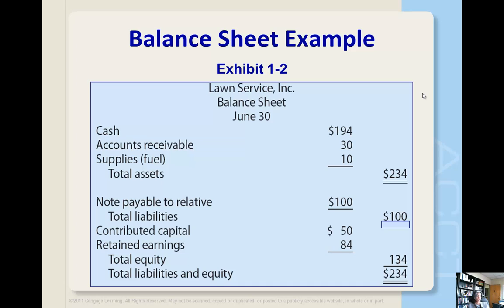Just as we had with the income statement, let's look at an example on the balance sheet. Same company as before — Lawn Service — here's their balance sheet as of June 30th. Assets for this company include cash, accounts receivable, and supplies, totaling $234. Then we have liabilities, which are just notes payable. Finally, our equity consists of two sources: contributed capital and retained earnings. Altogether, the equity is $134, and equity plus liabilities equals assets.